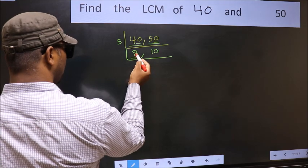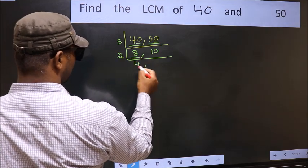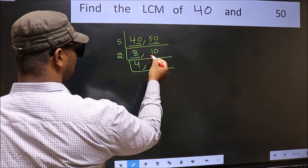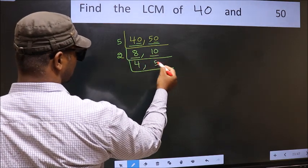Now here we have 8. 8 is 2 times 4 is 8. The other number 10. When do we get 10 in the 2 table? 2 times 5 is 10.